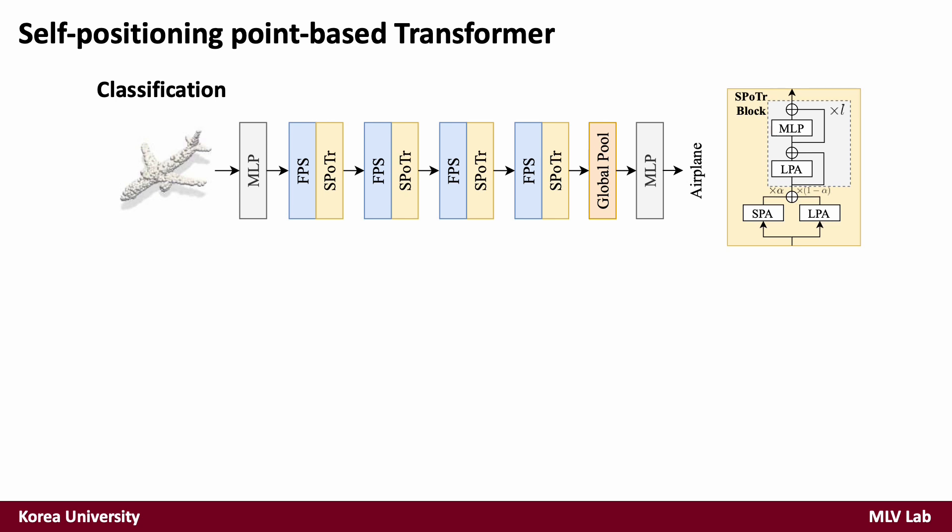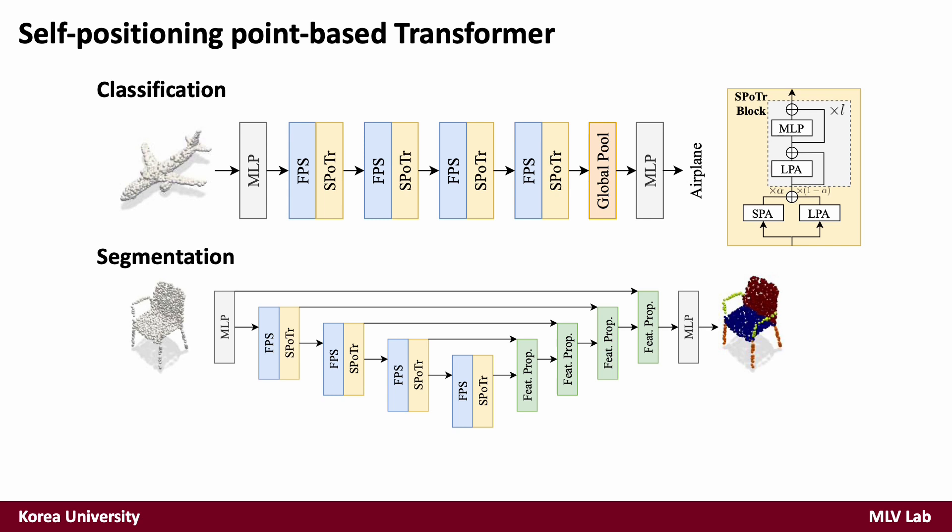We now propose SPFormer, which utilizes self-positioning point-based attention with local point attention. By combining LPA and SPA, it captures not only local and short-distance information, but also long-distance and global information. For the shape classification task, we build our transformer backbone by stacking SPFormer blocks as described in the upper figure. For semantic segmentation, we apply a U-Net-designed architecture, which contains feature propagation and SPFormer blocks for dense prediction.